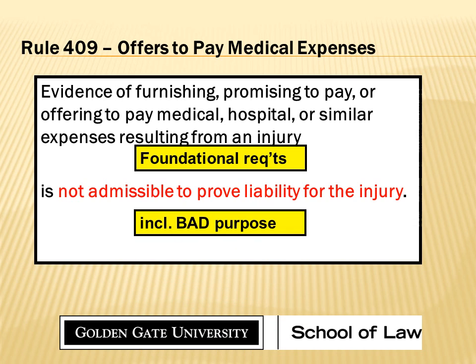There's the two. So as the opponent, if something like this is coming up at trial, you know the opponent is going to stand up, object, offer to pay medical expenses under 409, make their way over to sidebar, and say: your honor, the two foundational requirements are met. This is evidence of a promise to pay, and the proponent — the one trying to put on this evidence — is trying to put it on for the bad purpose to prove liability.